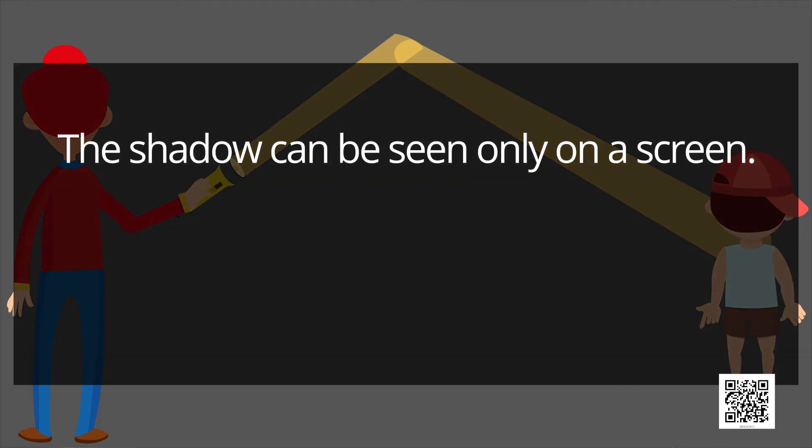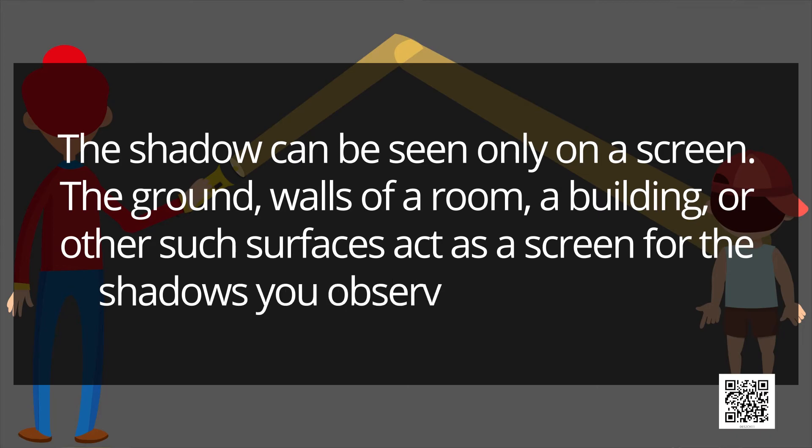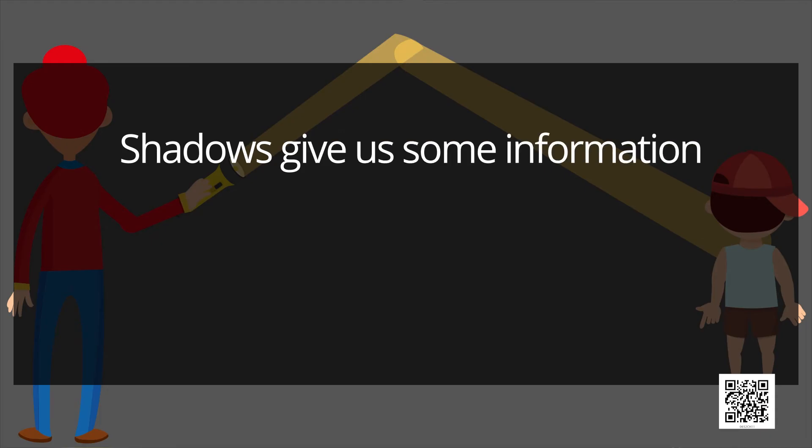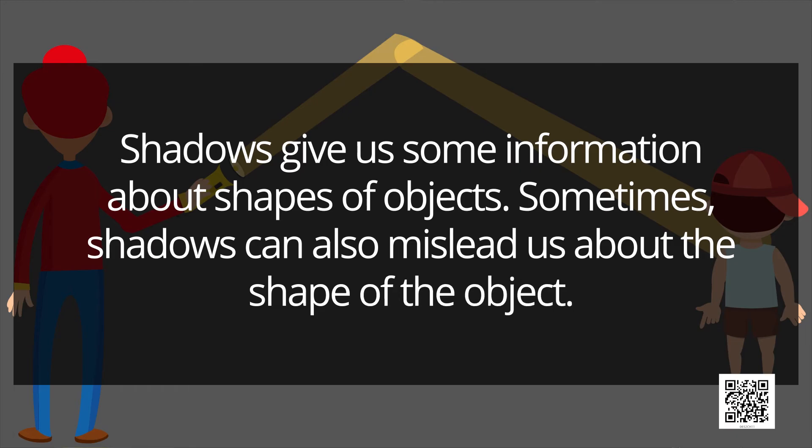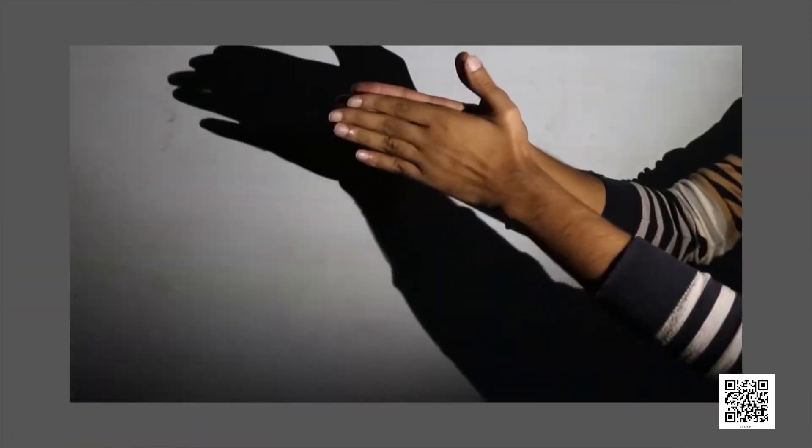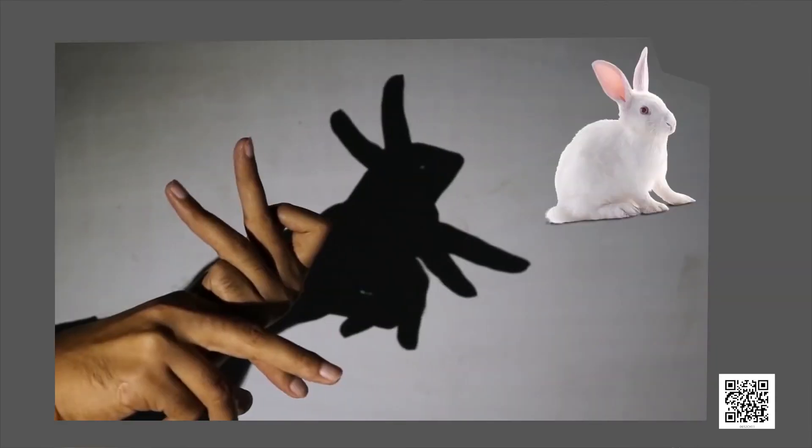The shadow can be seen only on a screen. The ground, walls of a room, a building or other such surfaces act as a screen for the shadows you observe in everyday life. Shadows give us some information about shapes of objects. Sometimes shadows can also mislead us about the shape of the object. Few shadows we can create with our hands and make believe that they are shadows of different animals.